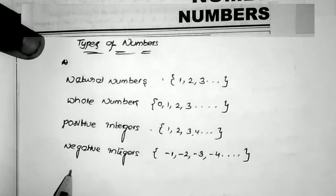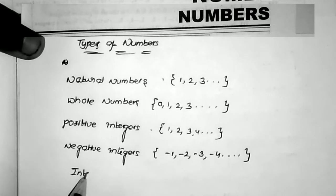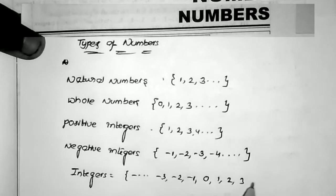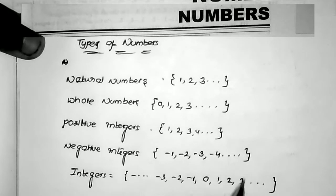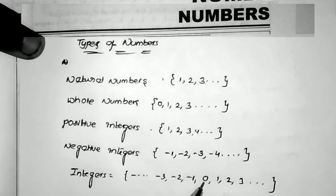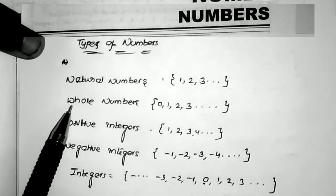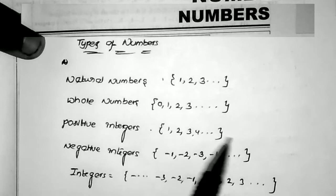Now what are integers? Integers include: minus 3, minus 2, minus 1, 0, 1, 2, 3 — all these values including 0. Note that 0 is neither positive nor negative. So integers include natural numbers, whole numbers, positive integers, and negative integers together.